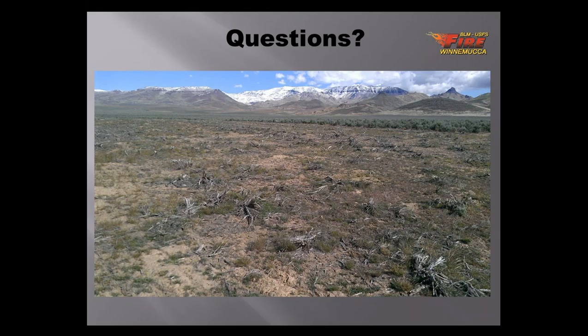Rob Vigener asks: how do sage-grouse respond to brown strips, green strips, and native fuel breaks? We don't really know what the impacts are on population dynamics. What I can say is that when you implement fuel breaks along existing roads and existing disturbance corridors, you're minimizing habitat fragmentation, which should limit disturbance to sage-grouse overall.